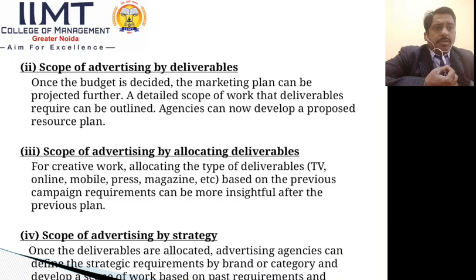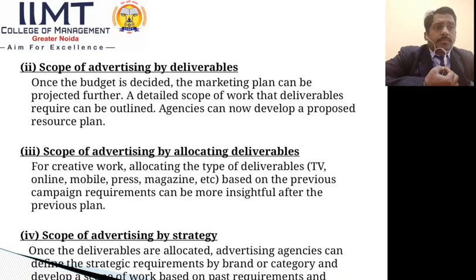The scope of advertising by allocating deliverables involves tools like television, online, mobile, press and magazine, which include facilities to design messages and attract customers. The scope of advertising by strategy is also vital because strategy depends on the present scenario and situation. If the situation changes, a company cannot quickly change its message in a magazine or on television, but it can change its message on social media. So companies need to find alternate options for sending messages, as social media is the best and cheapest way to share information.